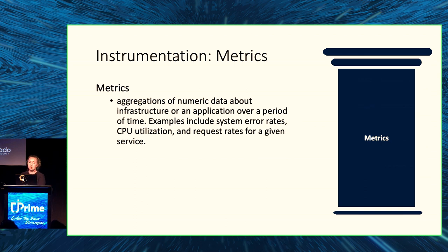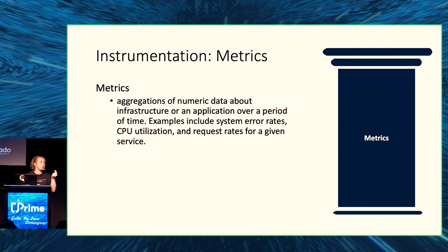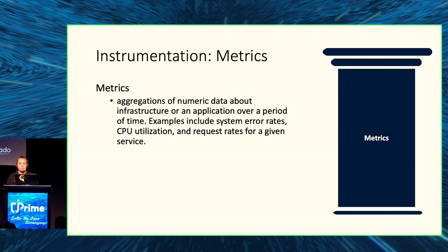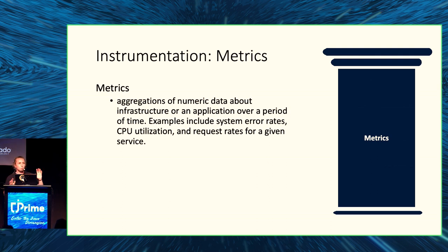Metrics are much more malleable to mathematical, probabilistic, and statistical transformations — sampling, aggregating, summarizing, and finding correlations. They're a lot more useful for understanding application behavior over time, not just a snapshot like a log. Metrics can include things like system error rates, CPU utilization, and request rates. They're also better suited for triggering alerts — running queries against an in-memory or time series database is far more efficient and reliable.